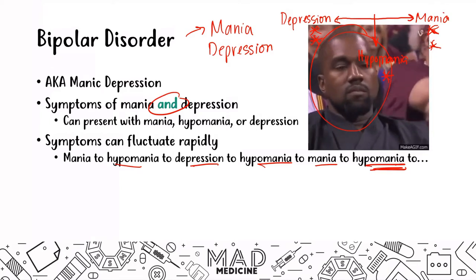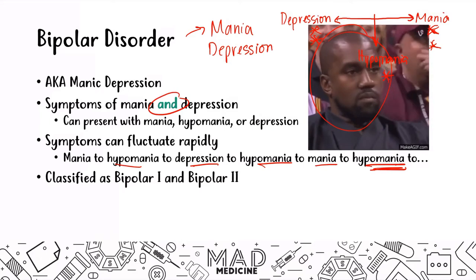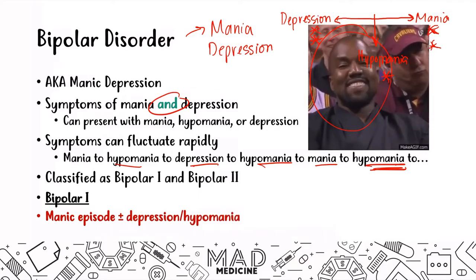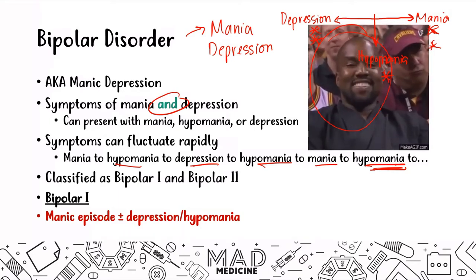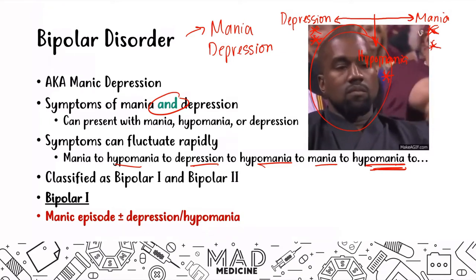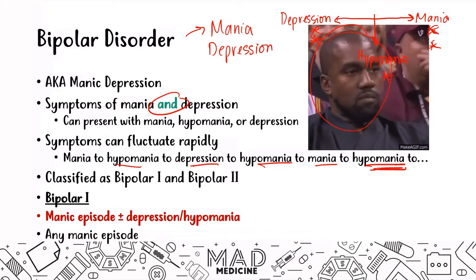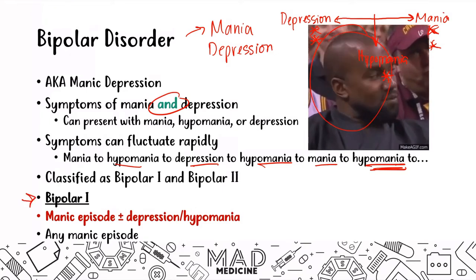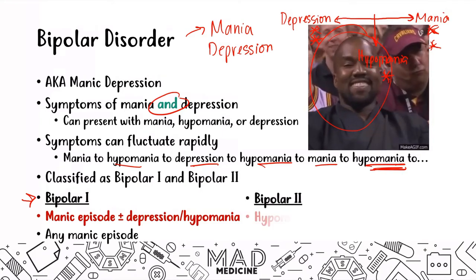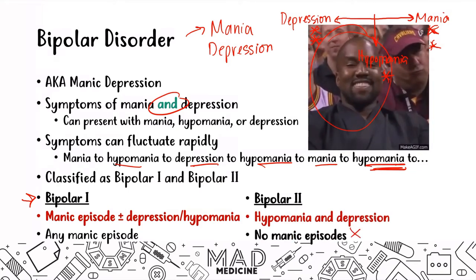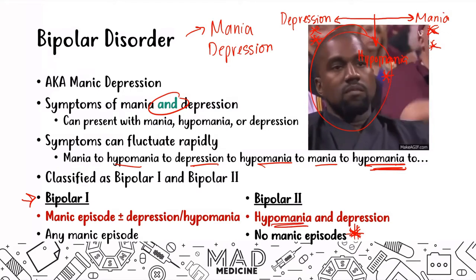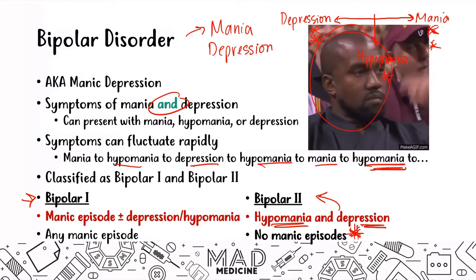Bipolar disorder is classified into two subparts: bipolar I and bipolar II. In bipolar I, you have someone who has a manic episode with or without depression or hypomania. If a patient has a full manic episode — any three of the DIGFAST criteria present — that's classified right away as bipolar I. They don't need to also have depression or hypomania. In bipolar II, the patient has hypomania and depression without full manic episodes.